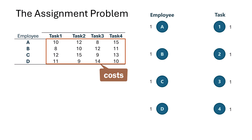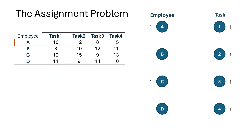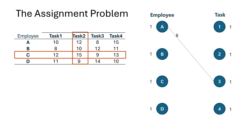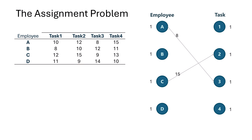For instance, assigning employee A to task 3 costs 8 units, and assigning employee C to task 2 costs 15 units. These units could represent dollars, hours, distance, or any other relevant metric.